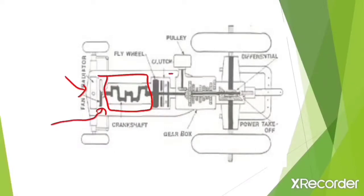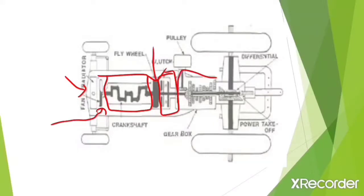This part is called the clutch. This is the flywheel, which drives the engine, and the flywheel gets its drive from the self-starter motor — the motor which runs with the help of the battery. Then this part is the gearbox, which is approximately present below the driving seat in the tractor.